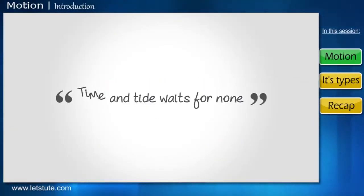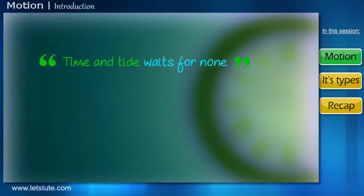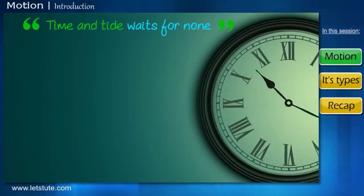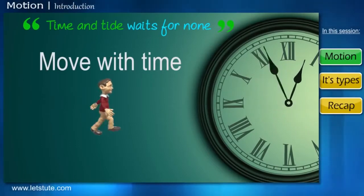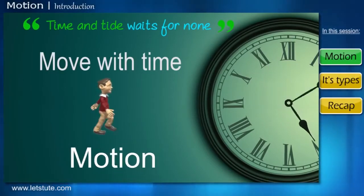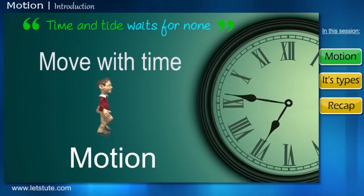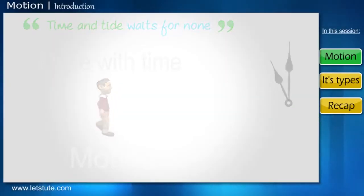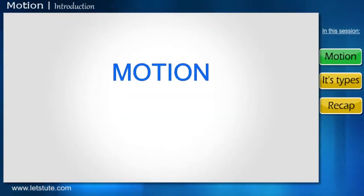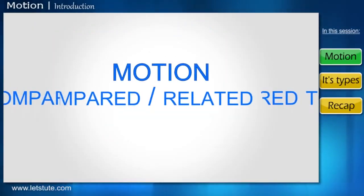We have all heard the phrase, time and tide waits for none. The part of the phrase which says waits for none indicates that for us to be regular, we have to do things on time. In other words, we have to move with time. This movement with time is called motion. If we pay a little more attention, we will realize that the phrase is also a comparison of ourselves to time. Thus, for a body to be in motion, it has to be compared to or related to something.